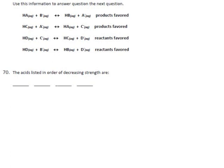We get a bit of a break from the calculation stuff in this section. This is about predicting which direction a reaction will go. If you have a reaction where there are two acids and two bases, then in a way you have two different chemicals fighting over which direction the equilibrium is going to fall.